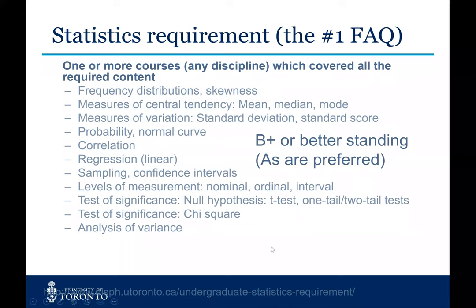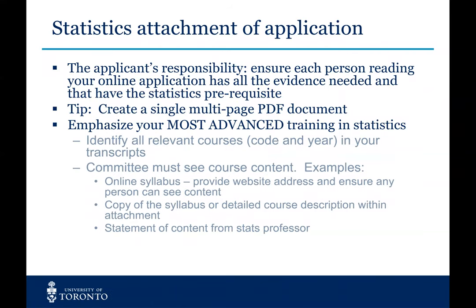The statistics requirement can be met in one course or a combination of courses. When listing your statistical requirement in your application, you can list multiple courses — they may not be called biostatistics; they might be called methods in community health or something like that. In that instance, you need to provide a syllabus or something that shows the content covered by that particular course. It is your responsibility to make sure that the course or courses you've taken meet those statistics requirements. We get lots of applicants and cannot review syllabi for all these different statistics courses from all over the world, so you need to make this clear to the people reviewing your application.